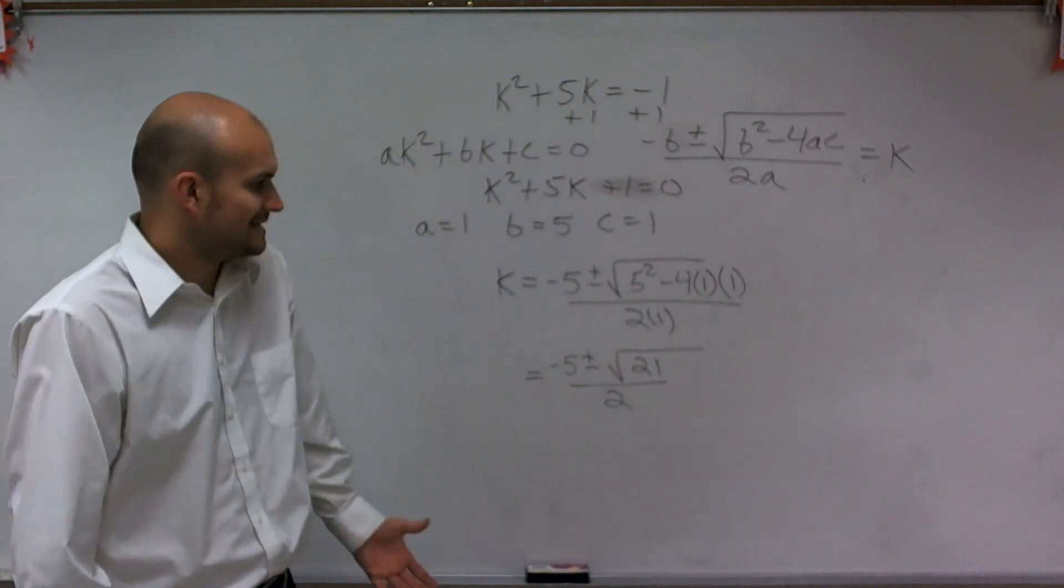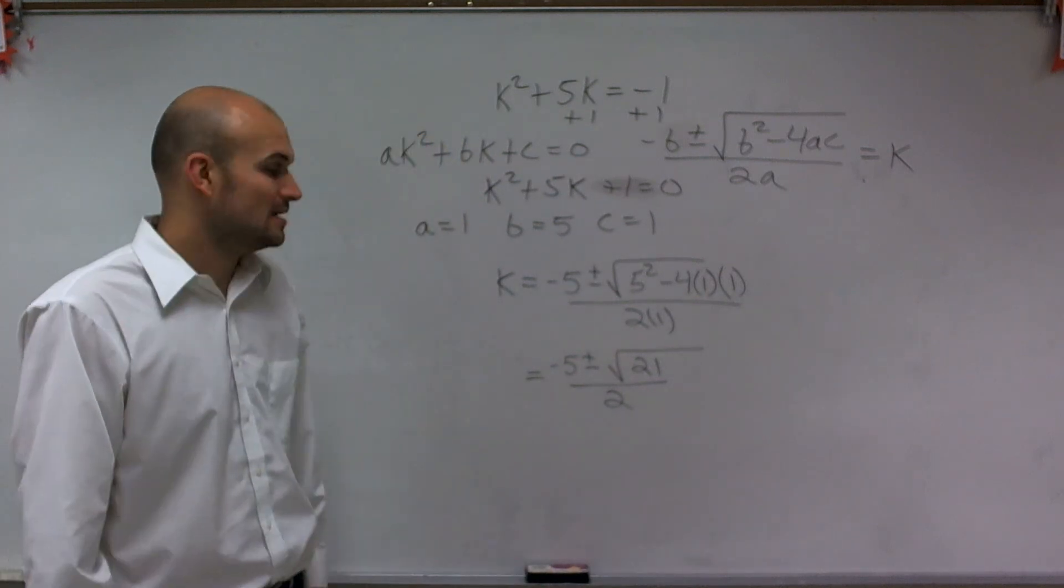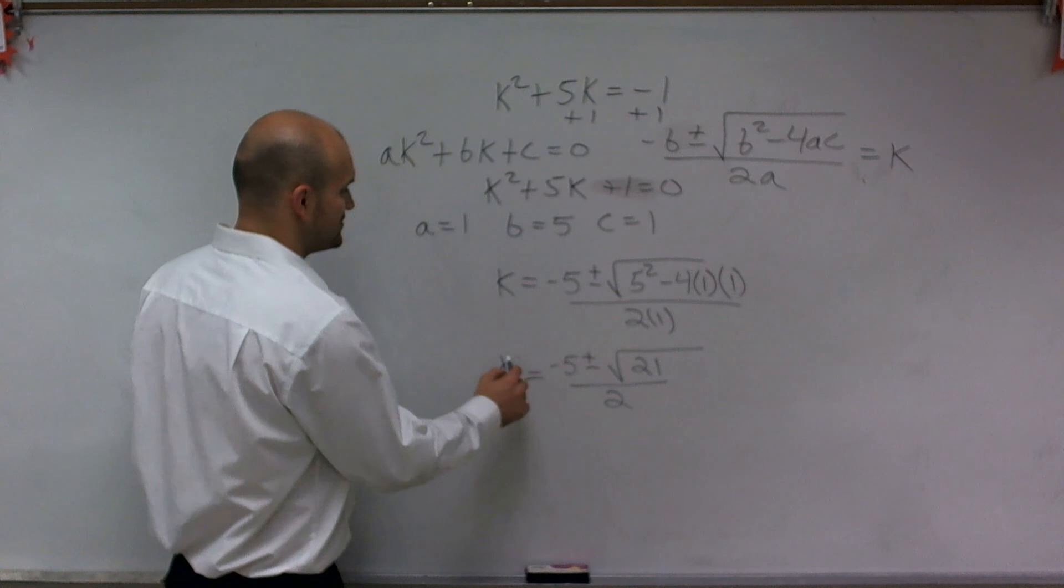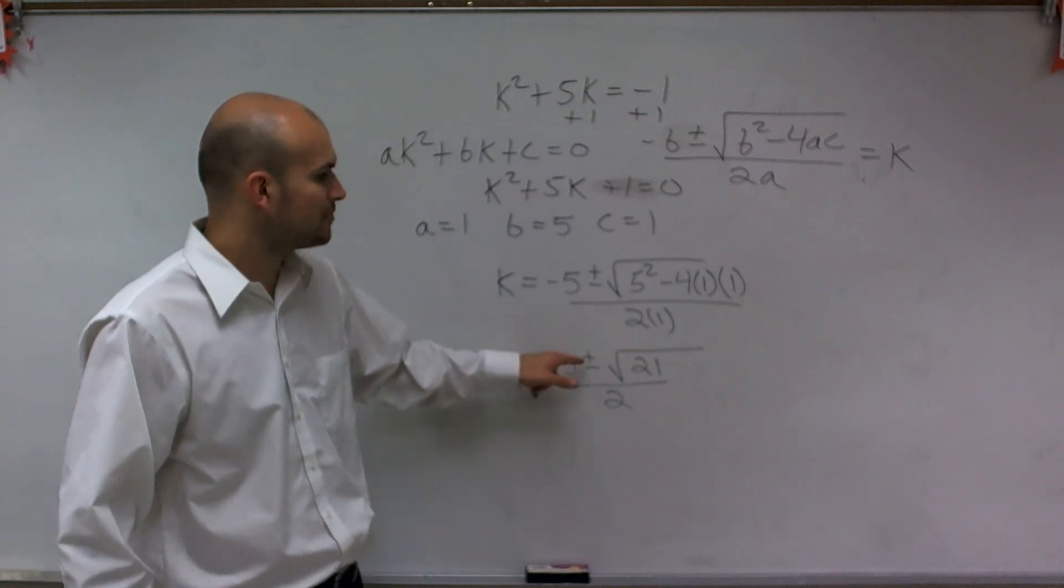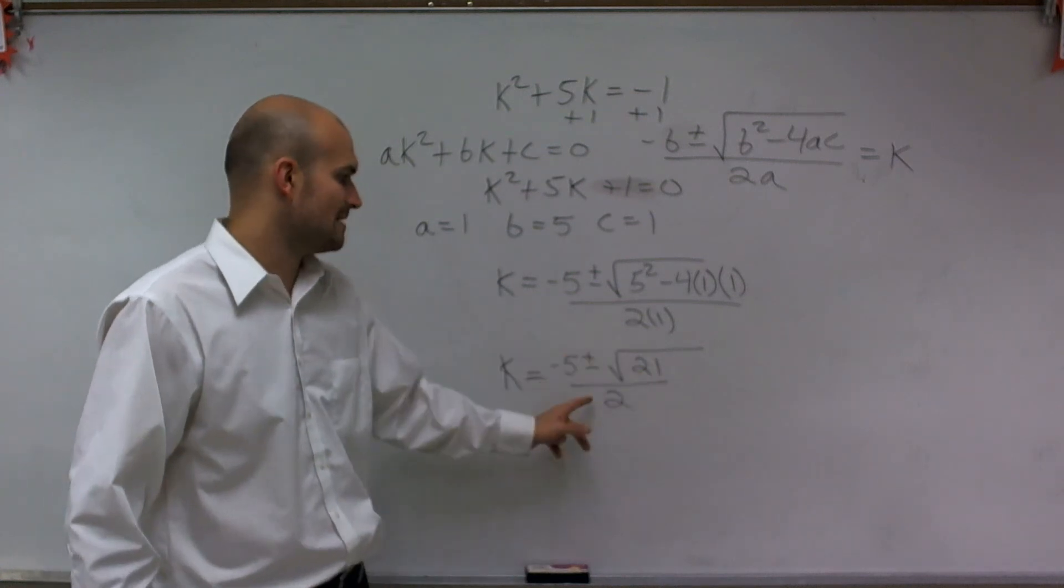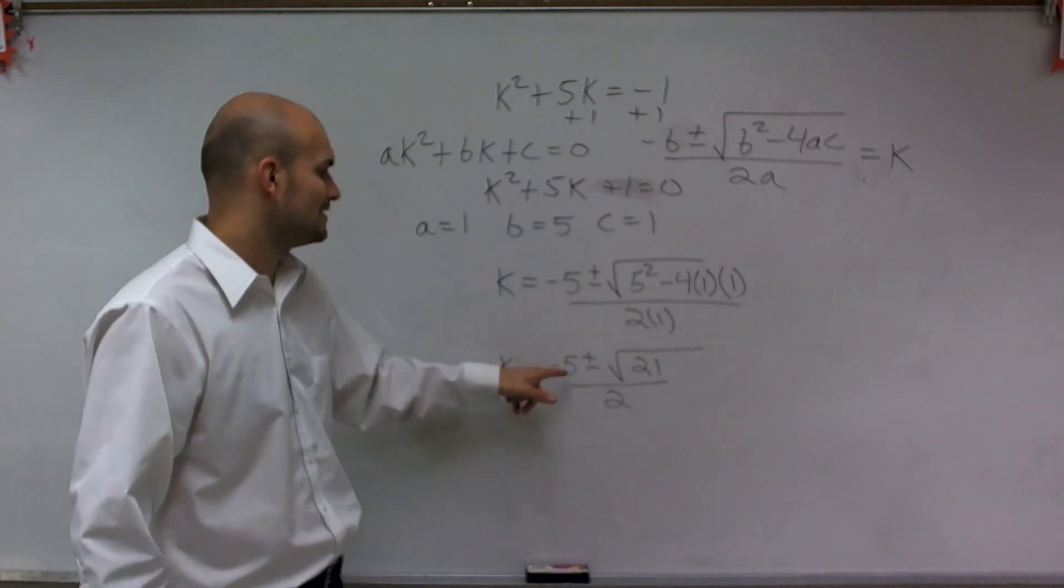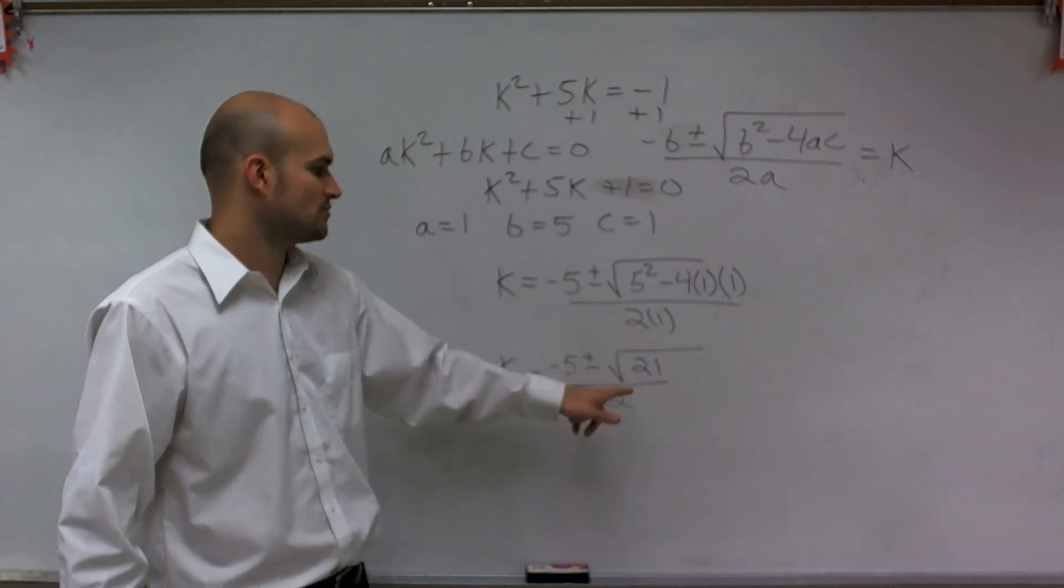Now, I cannot simplify this any further. So therefore, my two values of k are going to be k equals negative 5 plus square root of 21 divided by 2, and k equals negative 5 minus square root of 21 divided by 2.